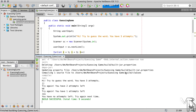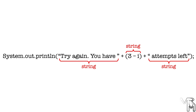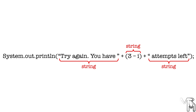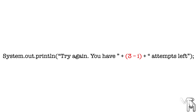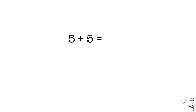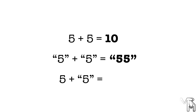So in Java we can put several strings together — concatenate strings — using the addition operator. The result of string concatenation is a new String that in this example we pass to println as a parameter. Note that because the "3 - i" part is not enclosed in quotation marks, the computer first subtracts i from 3, then converts the resulting number to a String and concatenates it. So if you add two numbers like 5 + 5 you get 10, but if you add two strings "5" + "5" you get "55", and if you add a number to a string, the number is treated as a string and both are concatenated.